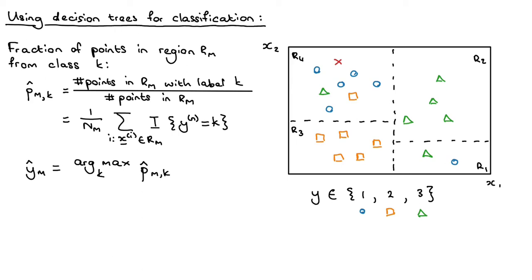It's actually quite easy. What you do is you calculate the proportion in a specific region — you calculate the fraction of points that land in that region — and you simply assign the class that occurs most often in that region. But we didn't talk about how we actually find these boundaries, or how we grow our tree, which tells us how to partition our input feature space.